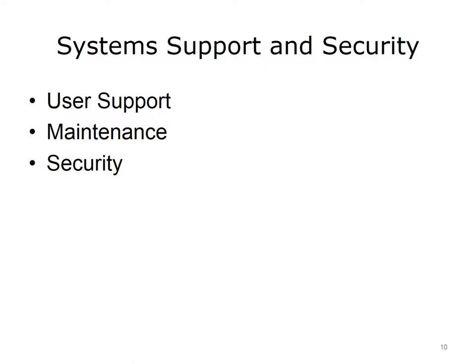The final stage of systems development is systems support and security. After the information system is deployed, there must be resources in place for supporting it over time and making sure that it is secure. User support helps system users perform the tasks they need to accomplish with the system. Maintenance refers to updating the system to address any errors or problems that arise, and to add new features. Finally, security ensures that the system is properly protected.